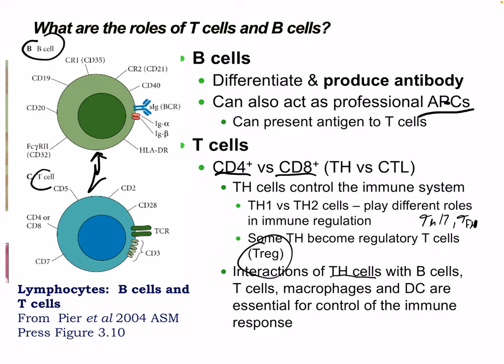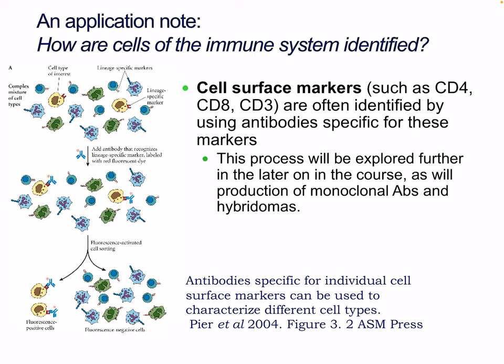Here we can see our B cell and T cell. The basic distinction is the T cell receptor versus the B cell receptor. We have cell surface markers such as CD4, CD8, and CD3, which are often identified using antibodies for these markers — for example, we can send in an antibody that attaches only to CD4 and count how many cells have that specific marker. This process will be explored further when we look at monoclonal antibodies and hybridomas.